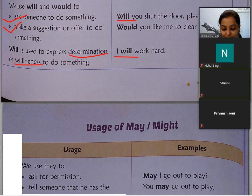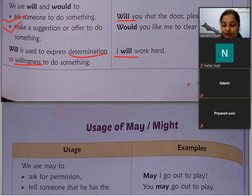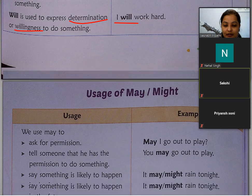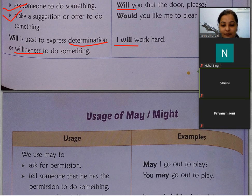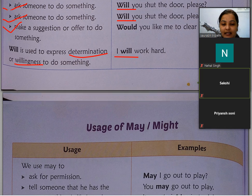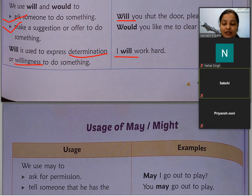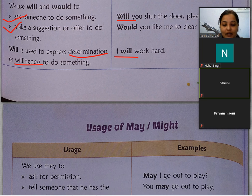Usage of MAY and MIGHT: May और might का meaning भी 'सकता' होता है। Can और could का use हम generally अपने level पर लोगों से बात करते समय करते हैं। लेकिन अगर कोई आपसे बहुत बड़ा है या elder है और आपको उससे permission मांगनी हो, तो mostly हम may या might का use करते हैं।